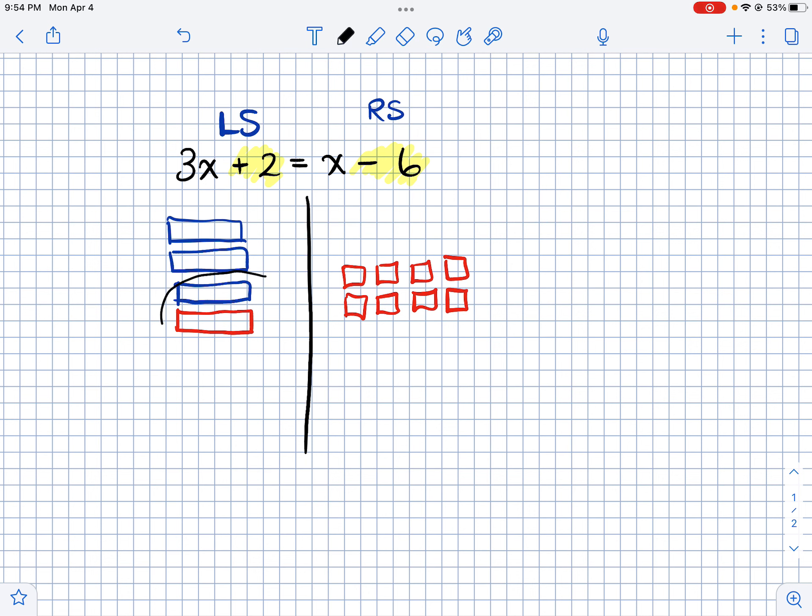And I can actually eliminate these things on the left side because X minus X would just be zero. So I'll get rid of those. So here's what I'm left with. Basically I'm left with 2x is equal to negative eight.